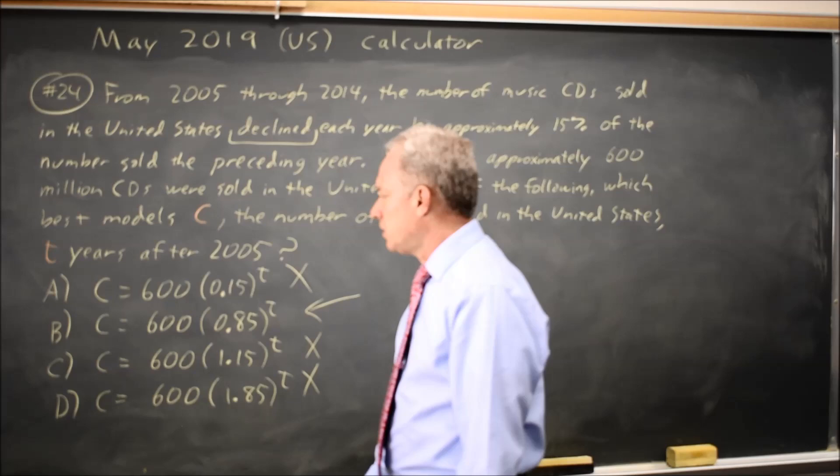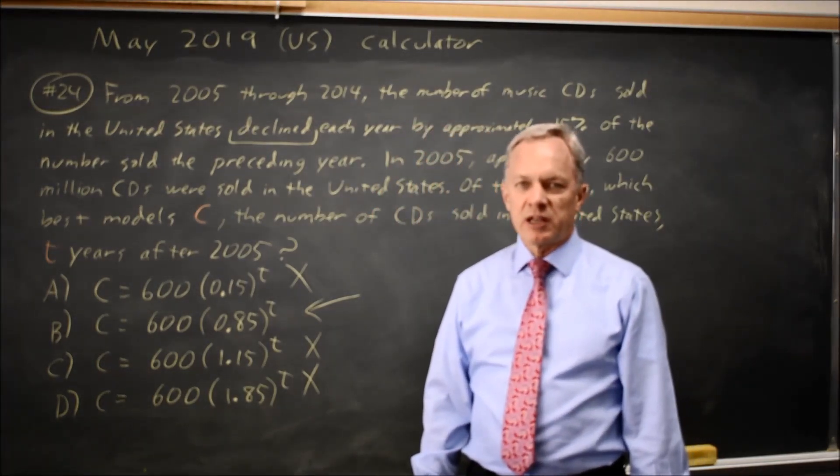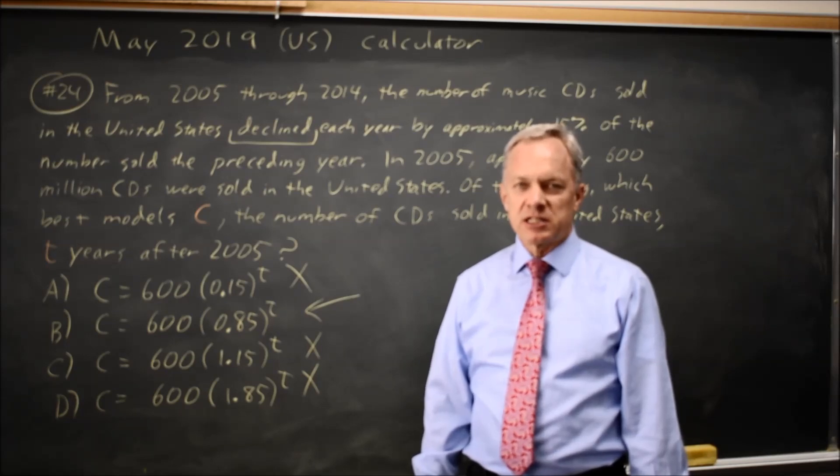Choice B is correct. And if you check, at T equals one, we have 15% fewer CDs than at T equals zero. And similarly, at T equals two, we have 15% fewer than at T equals one.